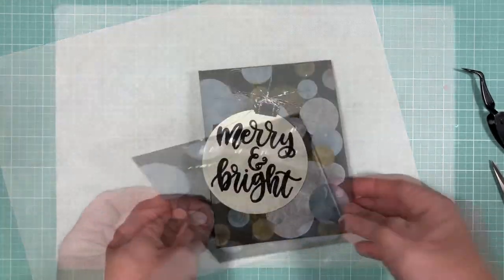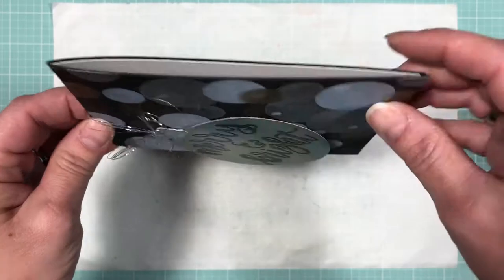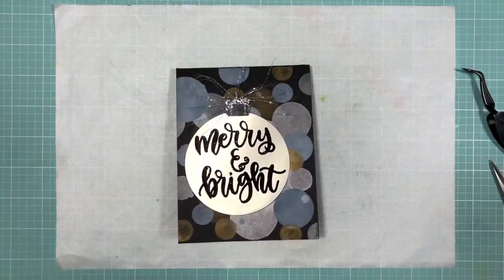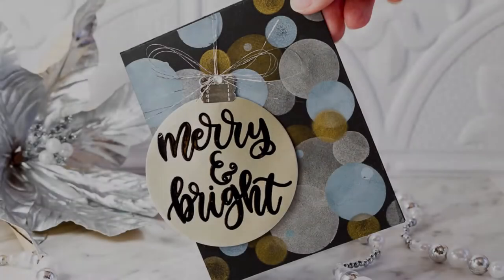And that's pretty much it for today's process video. I hope you've enjoyed watching me make this suspended swing ornament card and are inspired to create your own bokeh effect backgrounds.